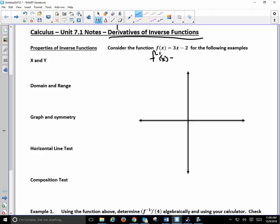I switch them. x becomes y, and y becomes x. So it turns out that this inverse function is x = 3y - 2. And now I'm going to solve for y. So I have x + 2 = 3y. Divide both sides by 3. And y = (1/3)x + 2/3.